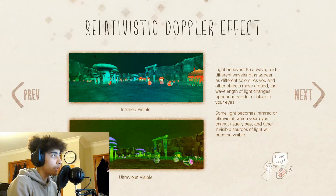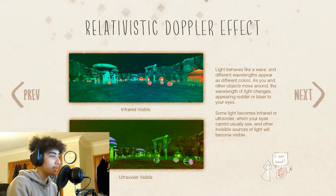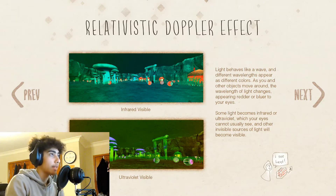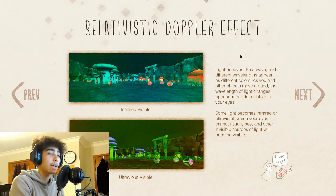Moving towards the orbs and the huts — there's red bouncing off of them. And moving away from the mushroom caps and the stone pillars gives ultraviolet. Light behaves like a wave, and different wavelengths appear as different colours. As all waves do, light has a Doppler effect.